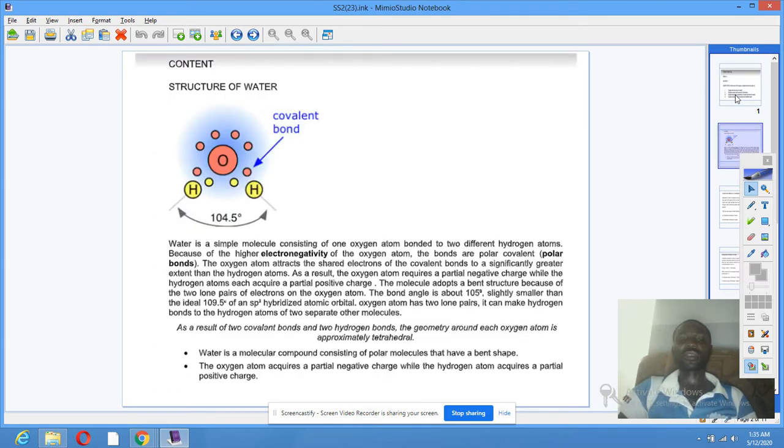Water consists of hydrogen and oxygen in ratio 2 to 1, bonded together at an angle of 104.5 degrees. Water is a molecular compound consisting of polar molecules that have a bent shape. The oxygen atom acquires a partial negative charge, while the hydrogen atom acquires a partial positive charge.